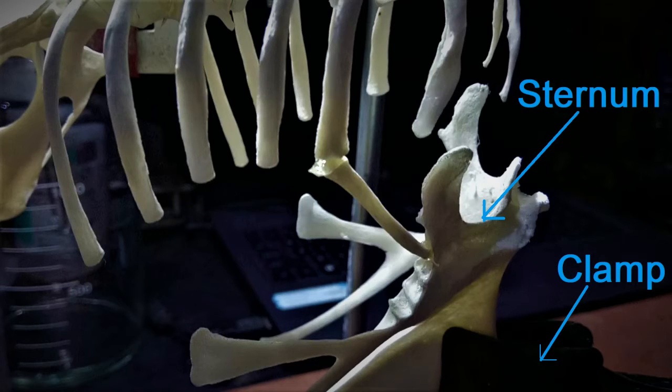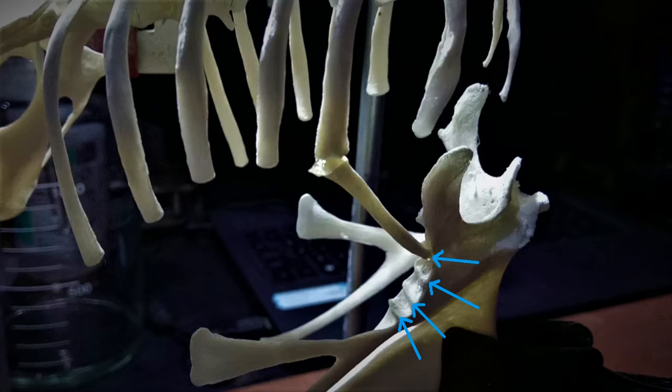Here's a close-up of the thoracic ribs and the sternum. On the sternum, there are four protrusions. These protrusions will connect with the first four sternal ribs. As you can see in this image, I've already glued the first sternal rib into the first protrusion.